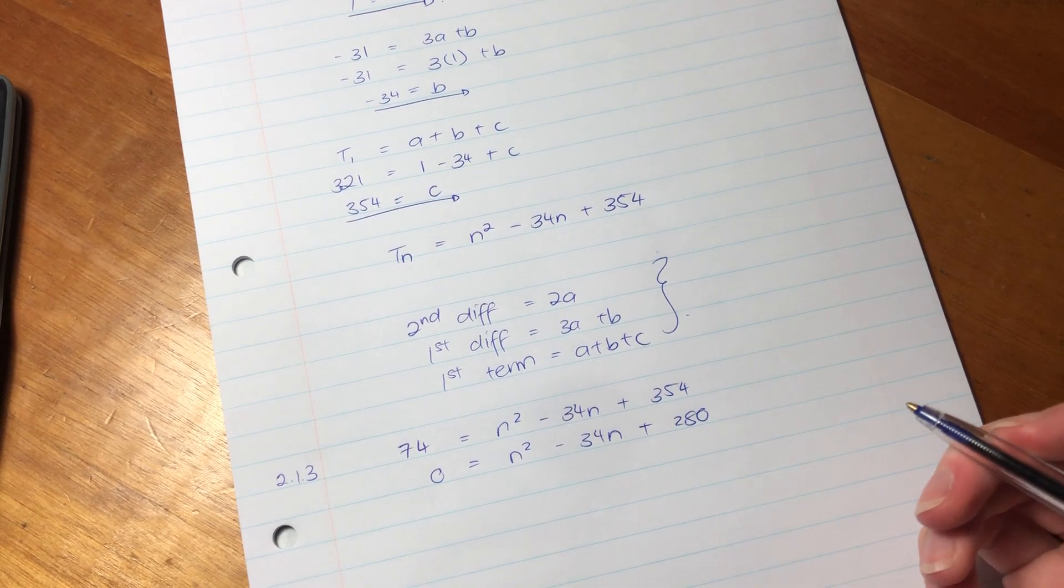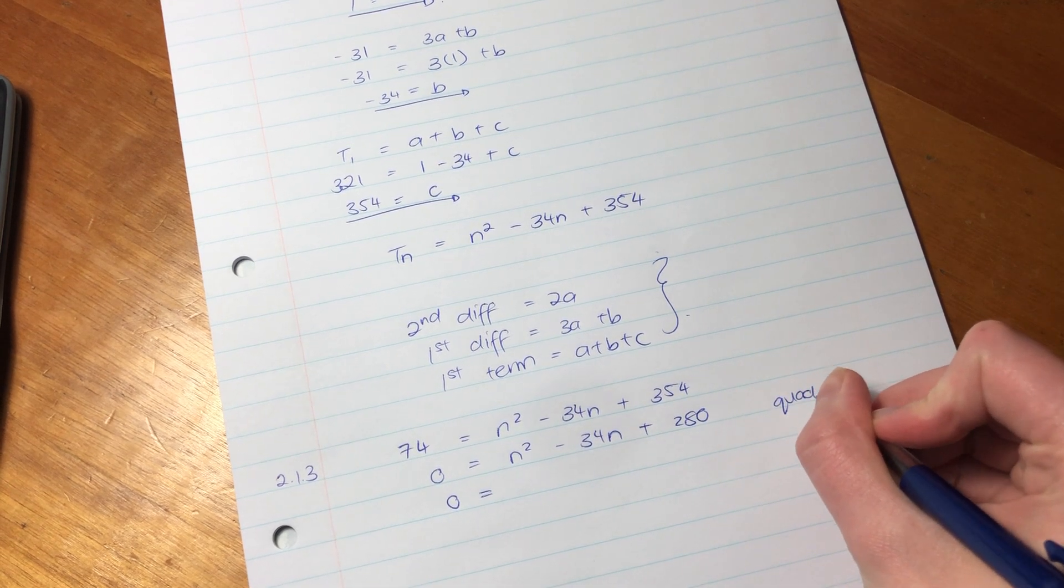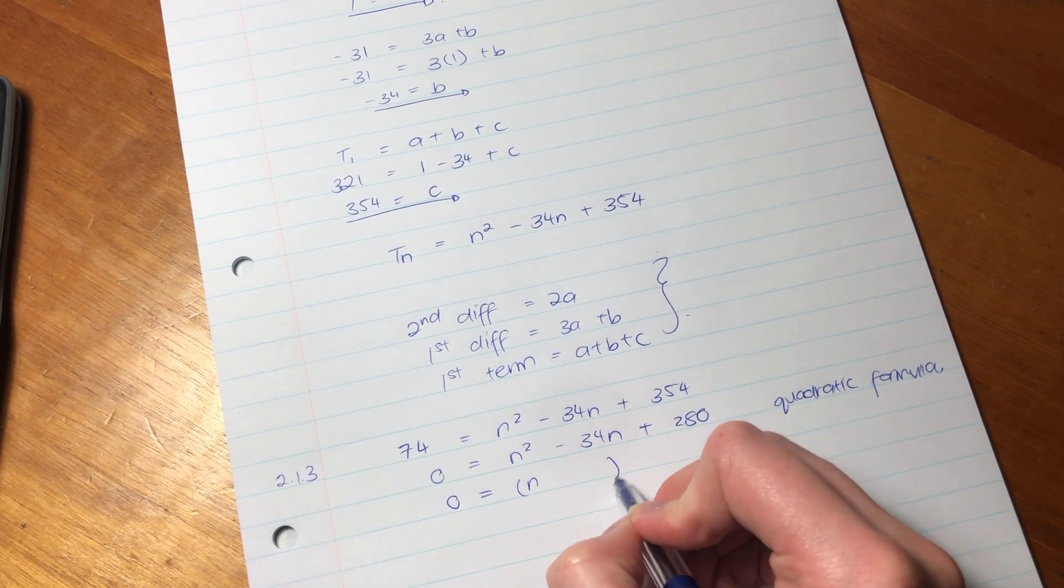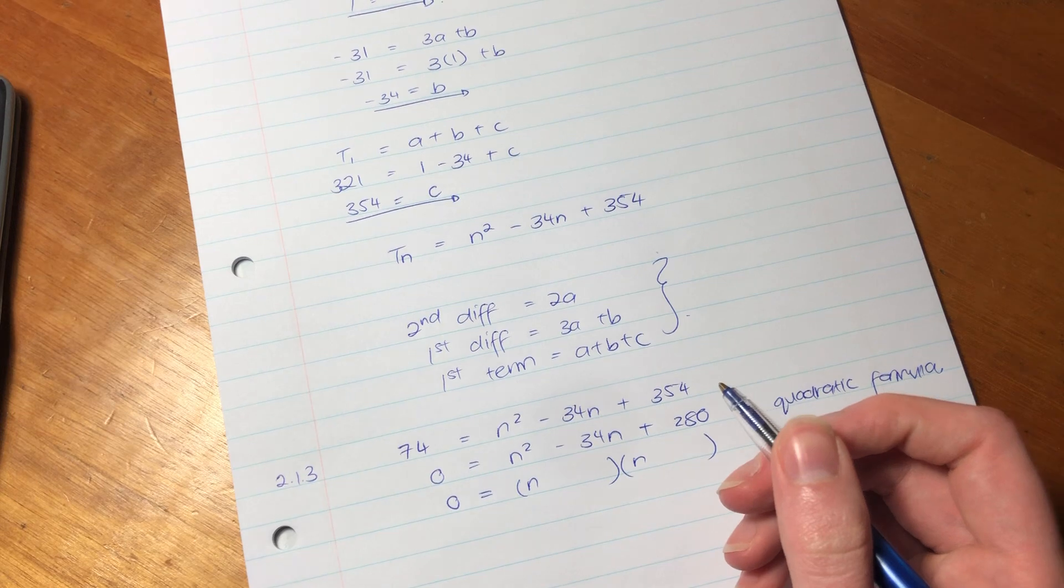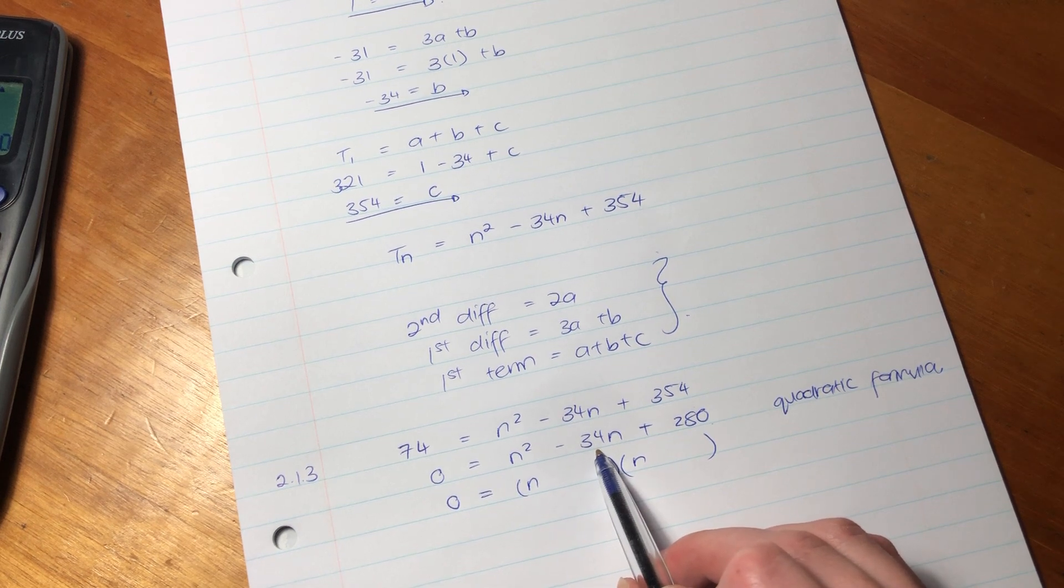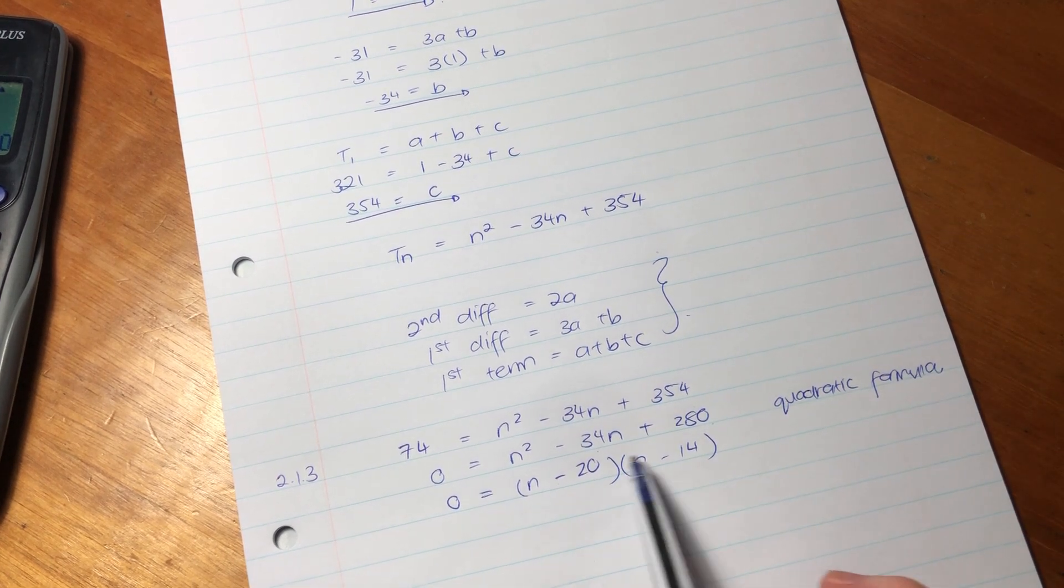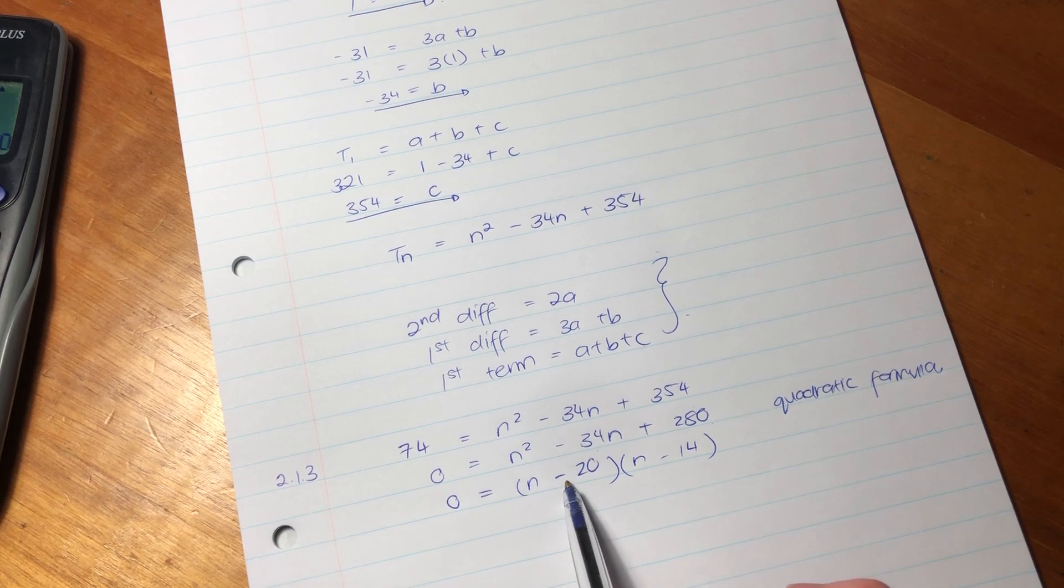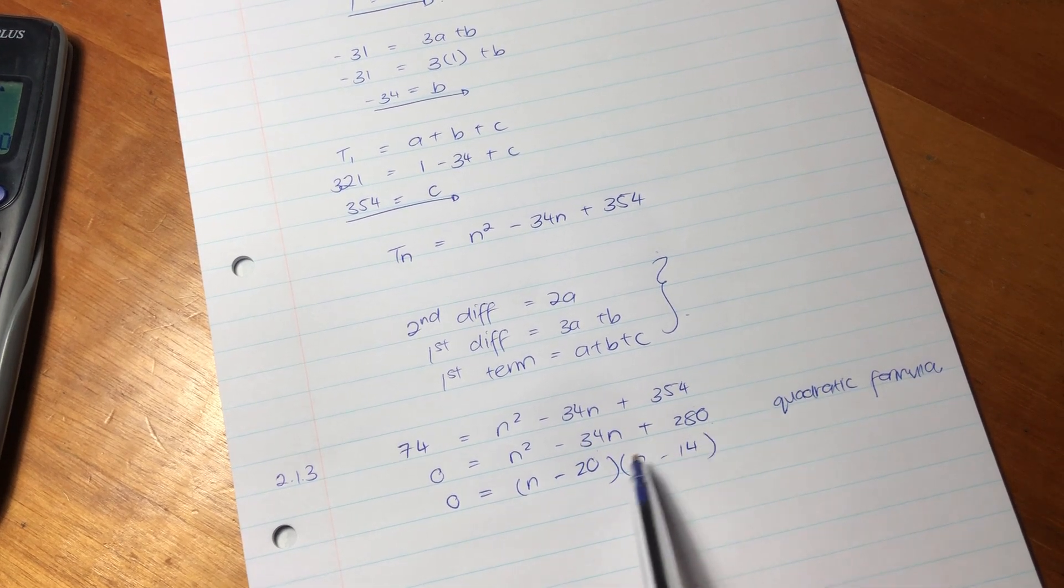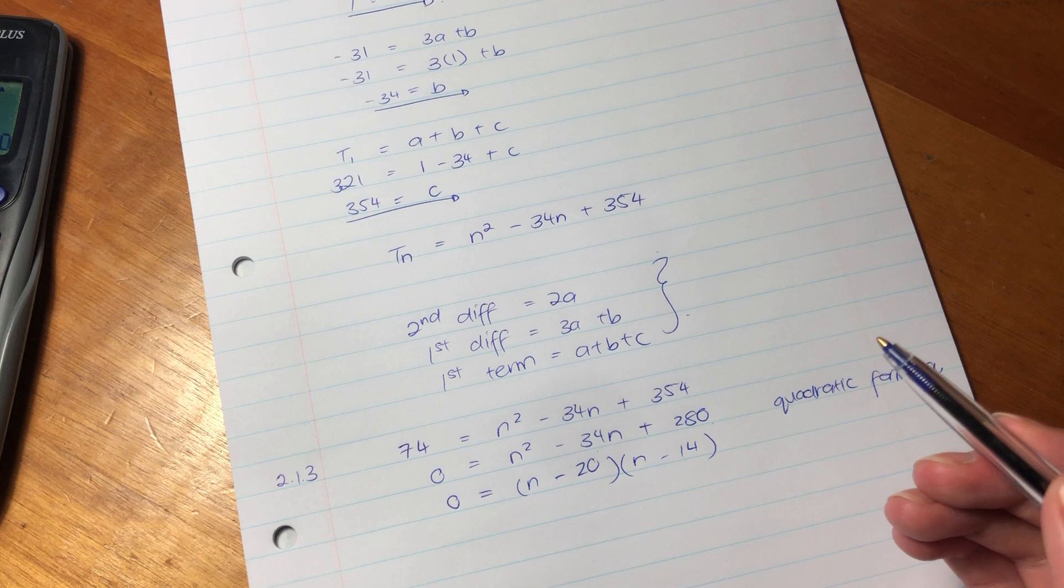And we want to solve for n in this instance. I'm always going to try to get zero on that side so that we can factorize. So 354 minus 74, I think it's 280 plus 280. So now we have to factorize. Now you could be saying, I cannot factorize that, that number is too big. Remember, you can always use the quadratic formula if you want. But this one's actually not too difficult. What I'm going to do is I'm just going to say, we're factorizing. We are going to say, what are the factors of 280 that can help me get to negative 34? I'm going to use negative 14 and negative 20.